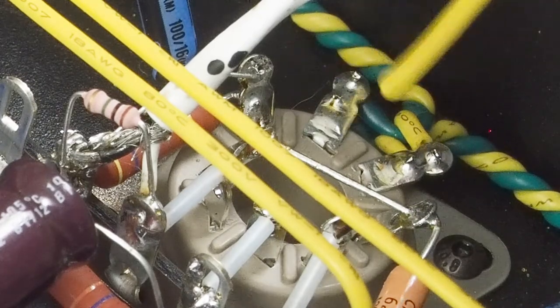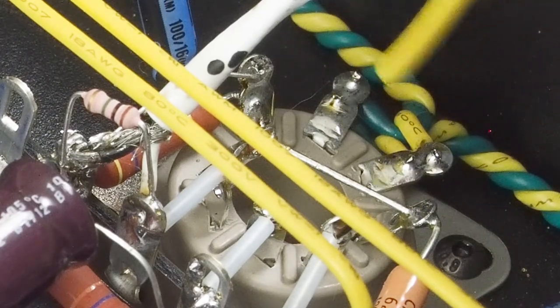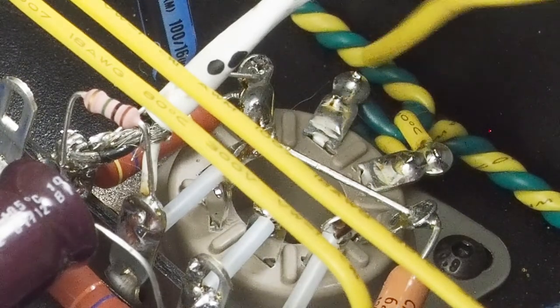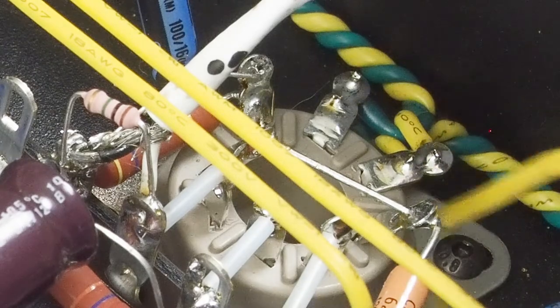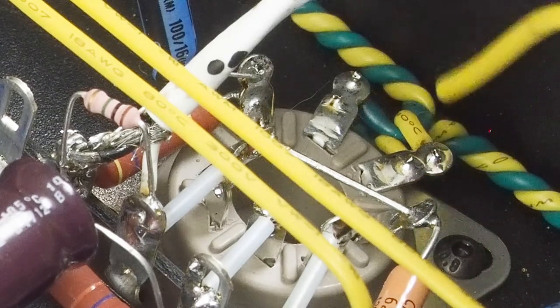And then I bend them over at 90 degrees so that they're real close to where this wiring is going to be tucked into this corner so that it's only about a half an inch away from the corner.